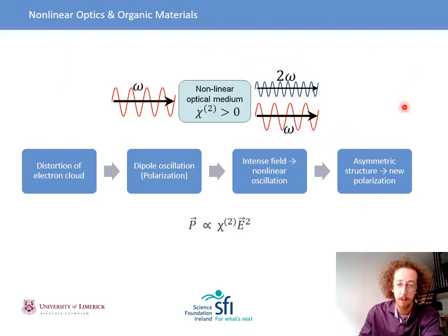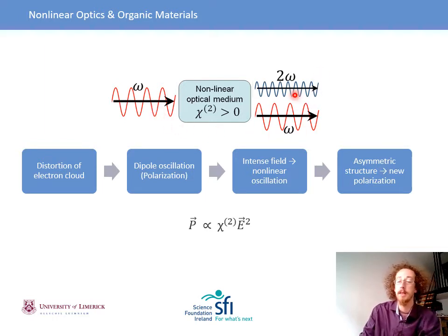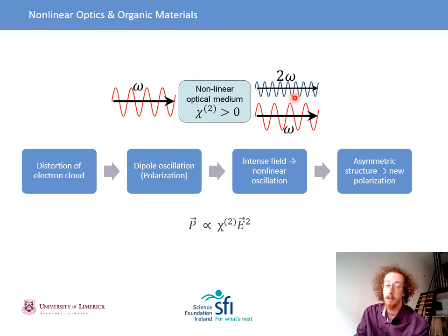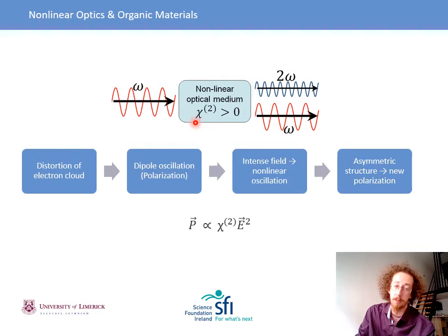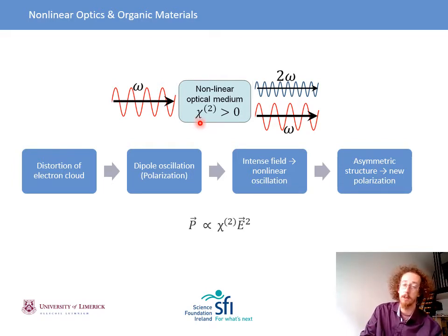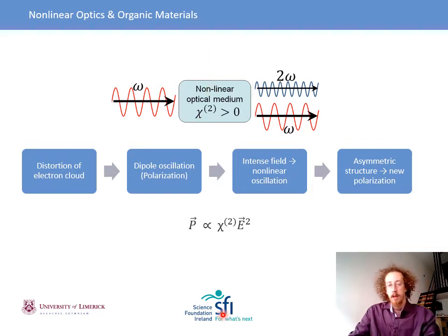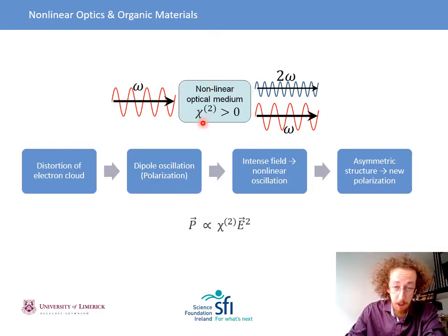The simplest example of this is called second harmonic generation, where you convert the incident wavelength into a new polarization that has half the wavelength, or twice the frequency. The efficiency of this process is characterised by the material property chi-2, or the non-linear susceptibility tensor in the second order. This study is about finding this property and the effect of morphology on it.